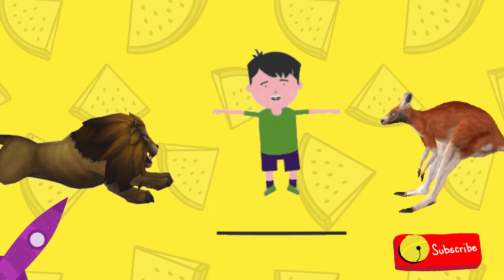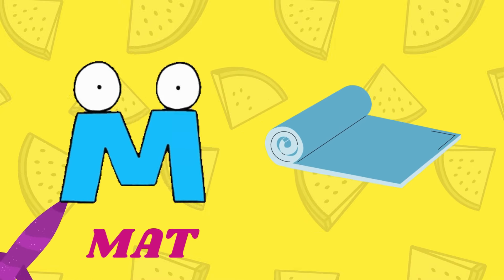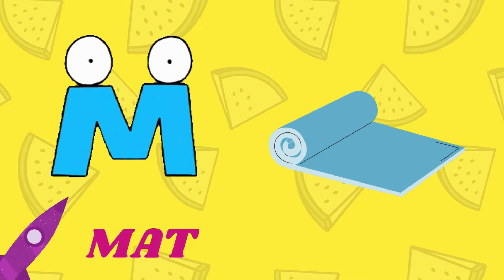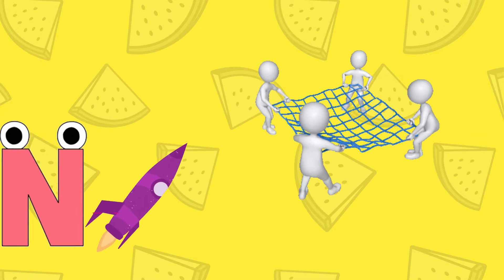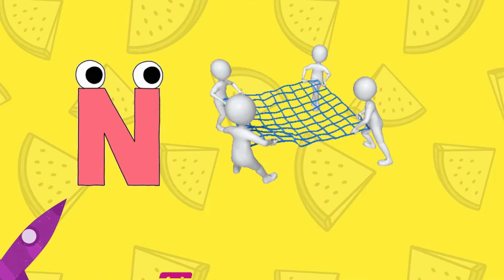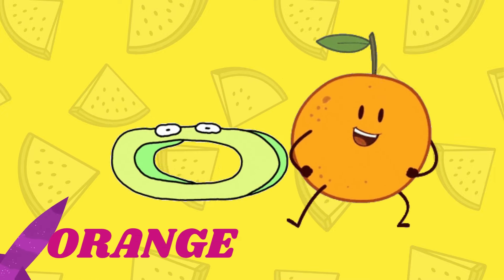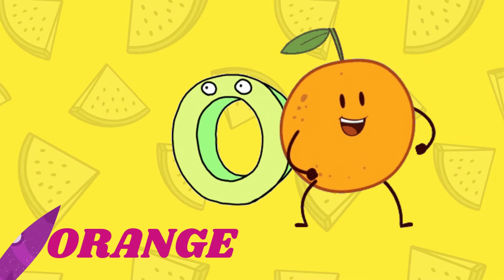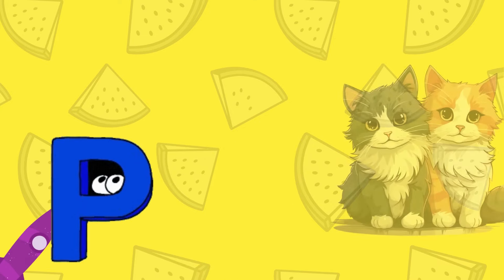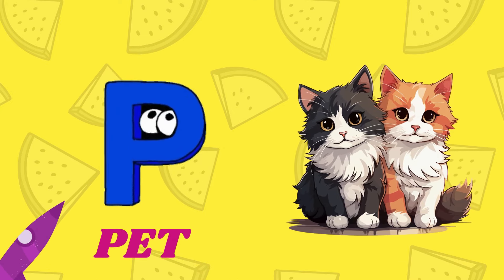M is for Mat, M-M-Mat. N is for Net, N-N-Net. O is for Orange, O-O-Orange. P is for Pet, P-P-Pet.